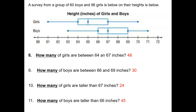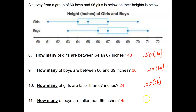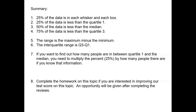Here's a summary of those problems: for number 8, I did 0.50 times 96; for number 9, 0.50 times 60; for number 10, it was 25% of 96; and for number 11, 75% of 60. You can read the full summary on your own. If you have any questions, please send me an email and I will help you.